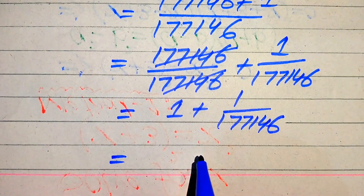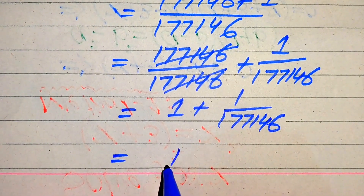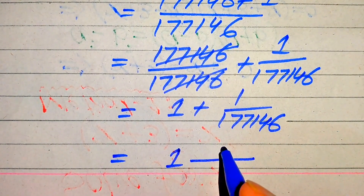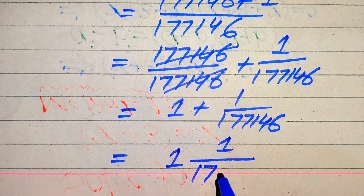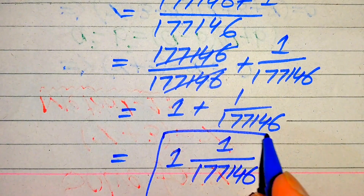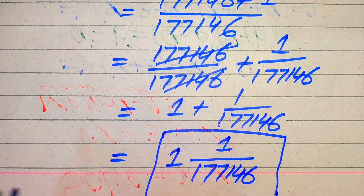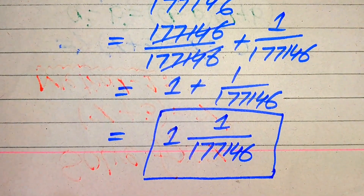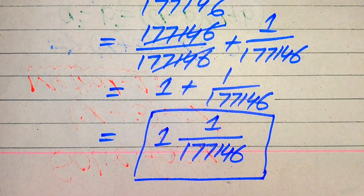We write our final answer as the mixed fraction 1 and 1 over 177,146. This is the final simplified form of the given expression. Thank you so much for watching this video. Please subscribe to my channel for more exciting videos.